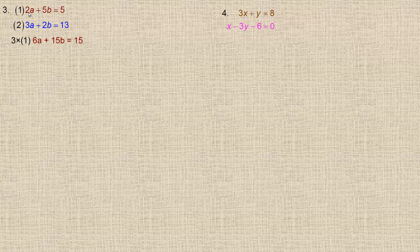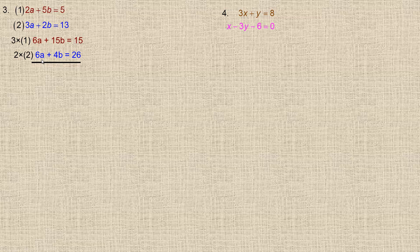I'll eliminate a. The least common multiple of 2 and 3 is 6, so I multiply equation 1 by 3 to get 6a plus 15b equals 15, and equation 2 by 2 to get 6a plus 4b equals 26. Since both a-coefficients are positive 6, I subtract the equations. 6a minus 6a cancels, giving 11b equals negative 11, so b equals negative 1.